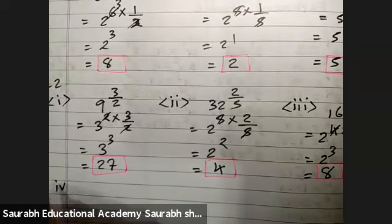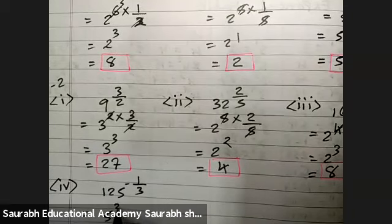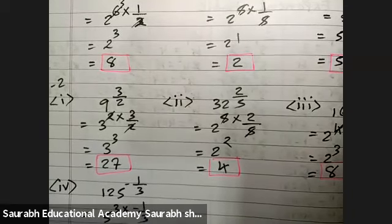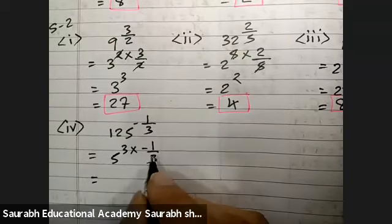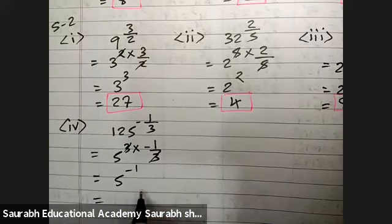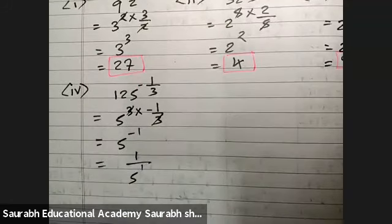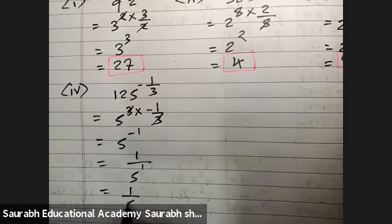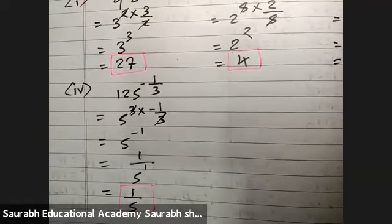Next: 125 raise to minus 1 by 3. That is 5 cube into minus 1 by 3, so the 3s cancel giving 5 raise to minus 1. To remove the minus exponent, we write 1 by 5 raise to 1. The answer is 1 by 5.